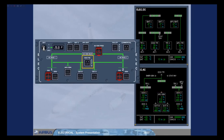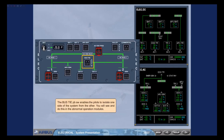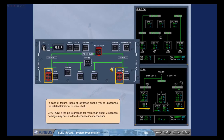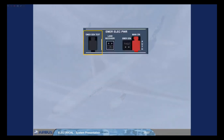The bus TIE push-button switch enables the pilots to interconnect the buses. In case of failure, these push-button switches enable you to disconnect the related IDG from its drive shaft. Caution: if the push-button is pressed for more than about 3 seconds, damage may occur to the disconnection mechanism. The emergency generator test switch is used by maintenance only to test the emergency generator.